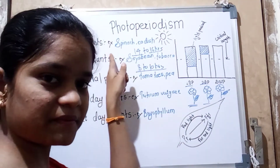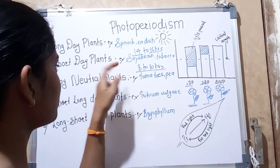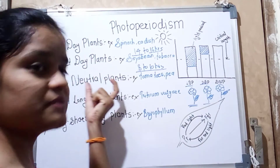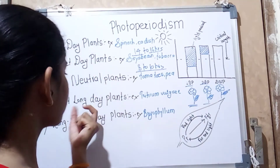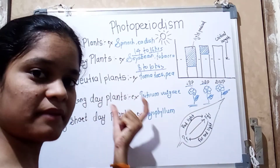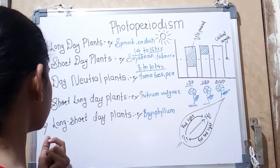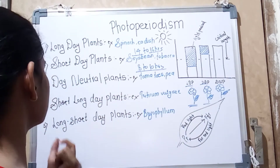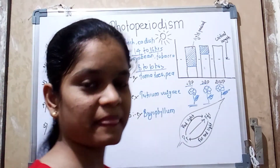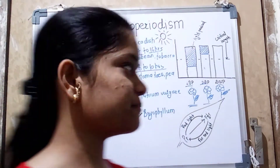The five categories are: first, long day plant; second, short day plant; third, day neutral plant; fourth, short-long day plant; and fifth, long-short day plant. Let's discuss them step by step.